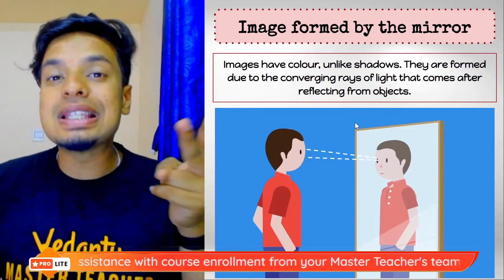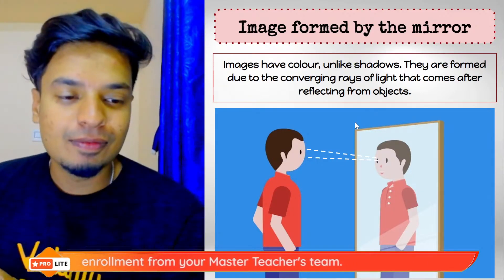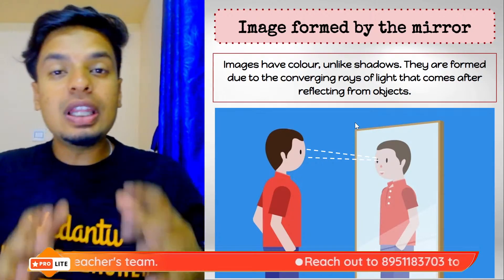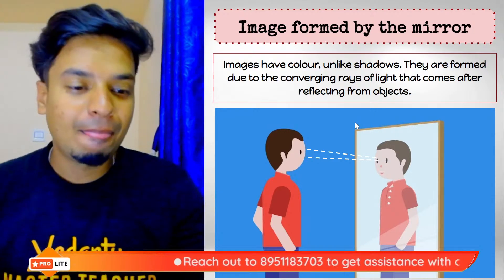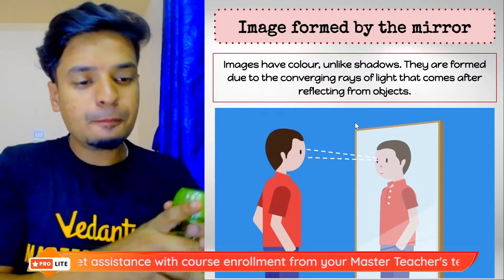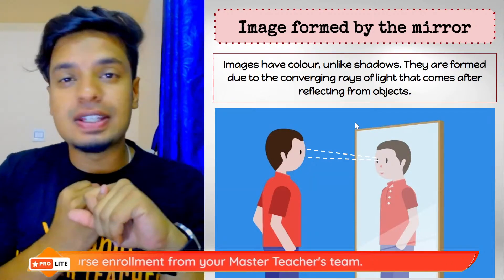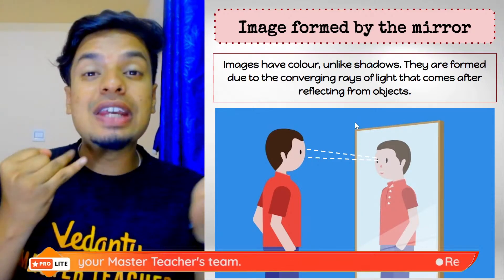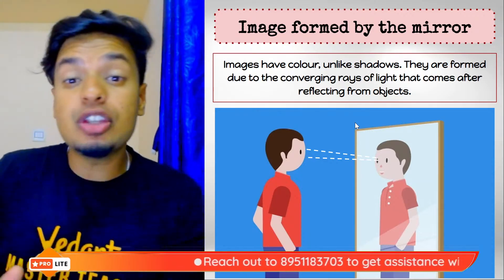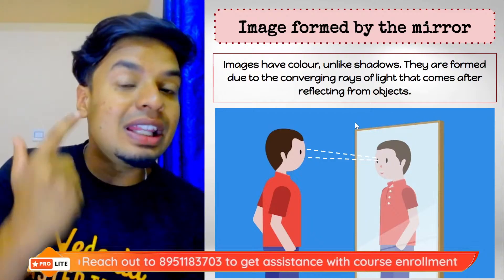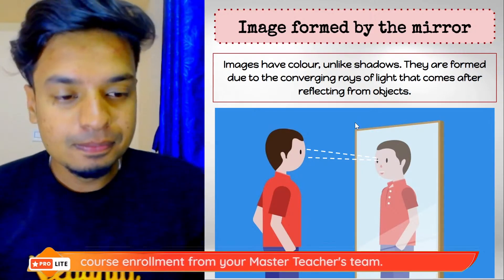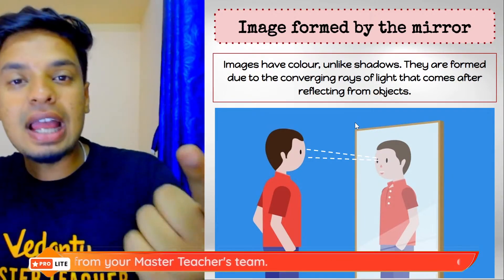Now we are comparing images and shadows. We already know the properties of shadows: shadows are dark in color, they are colorless no matter what color the object is, and shadows give us only the outline of the object — no more details. But when we talk about images, images have color and give all the details of the object. They are formed due to converging rays of light that come after reflection from objects.